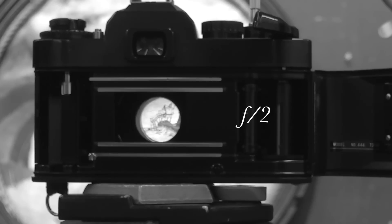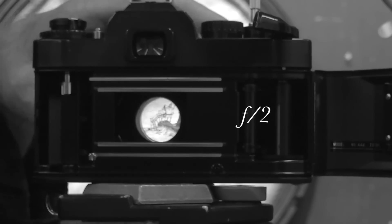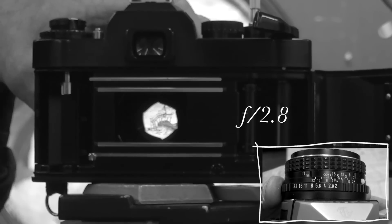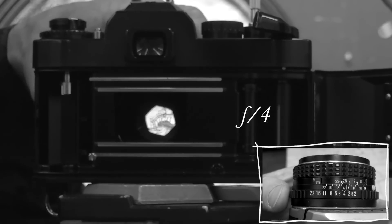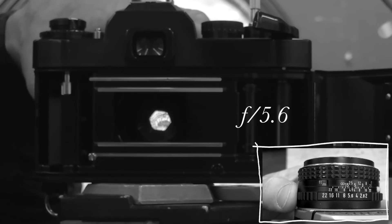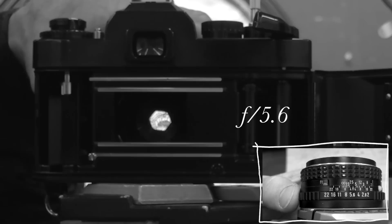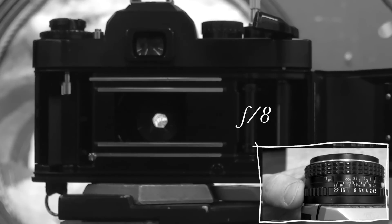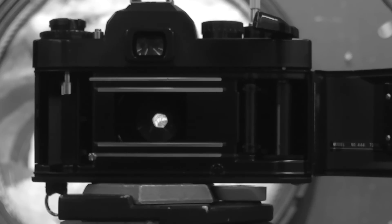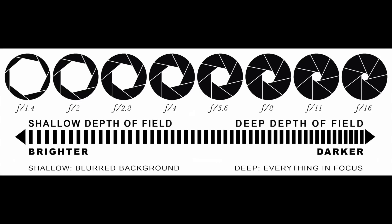Now I'm going to stop down the lens — that's the term 'stopping down' — and as I stop down or close the lens, less light comes into the camera. Right now it's wide open at f2, here's f2.8, f4, f5.6, f8. Each time I stop down the aperture, two things happen: one, less light comes into the camera because the aperture becomes a smaller fraction, giving less exposure to the film.